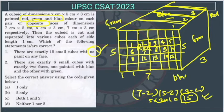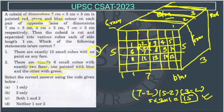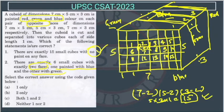Now the second statement: there are exactly 6 small cubes with exactly 2 faces painted — one blue and the other green. Blue is on the top face and green is on one side. The cubes painted with both blue and green are only at the edges where those faces meet — 1, 2, 3, 4 — so there are only 4 such cubes, not 6. So the second statement is wrong.